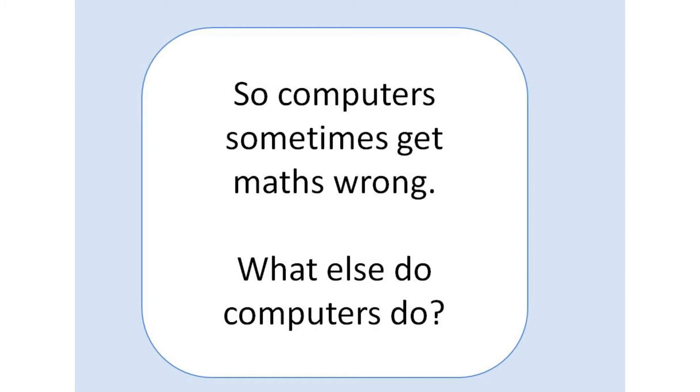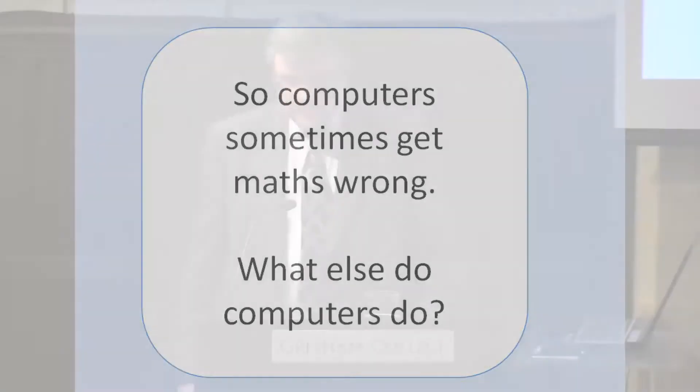We've seen that there are very good reasons why computers go wrong when they do mathematical calculations, but what else do computers do? I want to look now at one of the classic texts on computing: the 1950 paper by Alan Turing on machine intelligence, in which he proposed what we now call the Turing test. Turing argued that a sensible test of a computer's ability to display intelligent behavior is to ask whether it is capable of holding a conversation with us so that we could not tell whether we were chatting to a human being or to a computer.